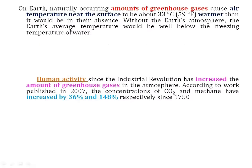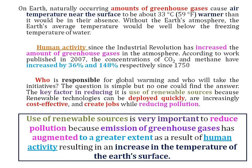This is how I will write a sample summary: 'Use of renewable sources is very important to reduce pollution because emission of greenhouse gases has augmented to a greater extent as a result of human activity, resulting in an increase in the temperature of the Earth's surface.' Each and every sentence is related to the paragraph. I also modified some words — for example, 'increased' became 'augmented to a greater extent.' This is how you can change the vocabulary.